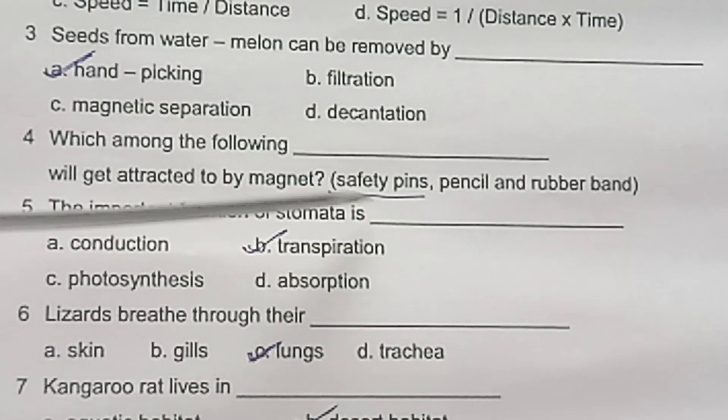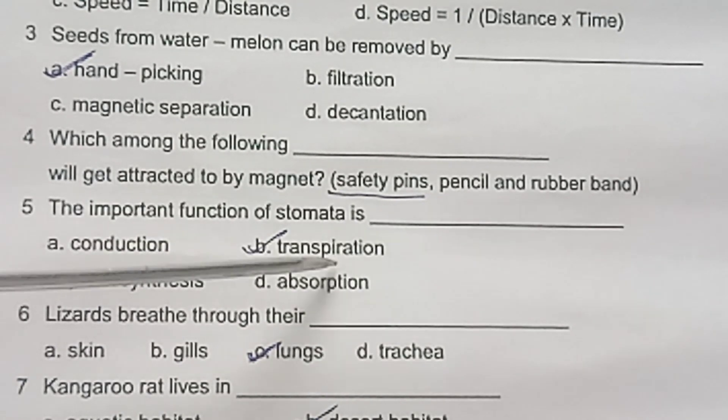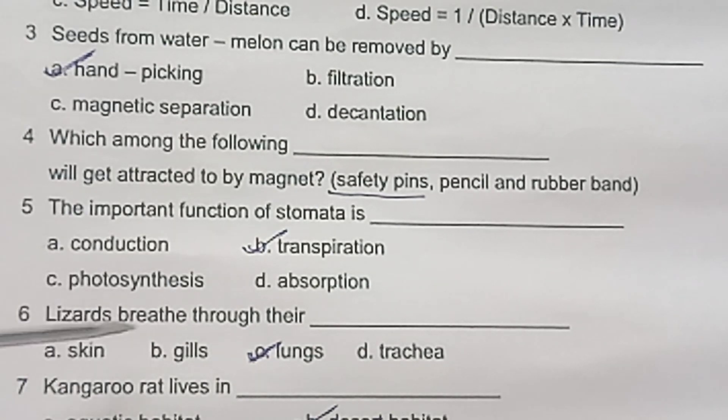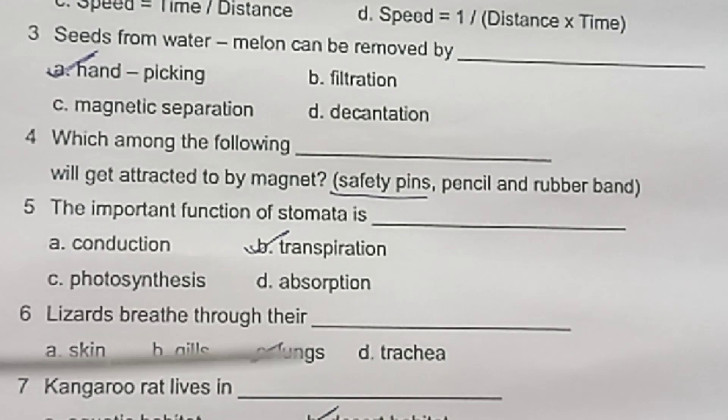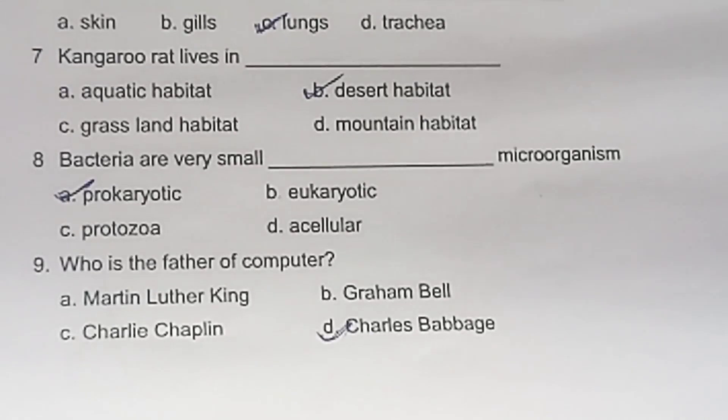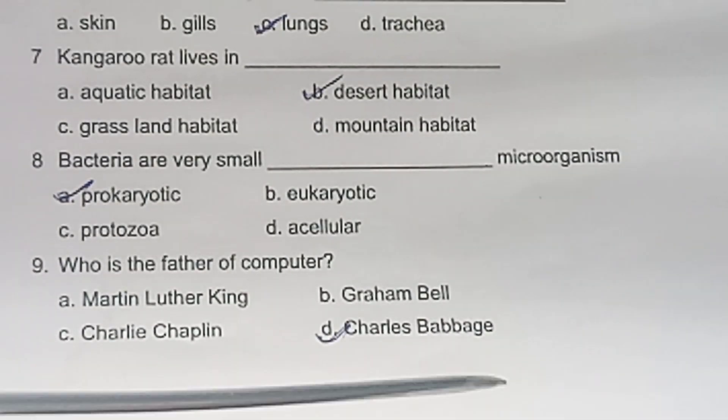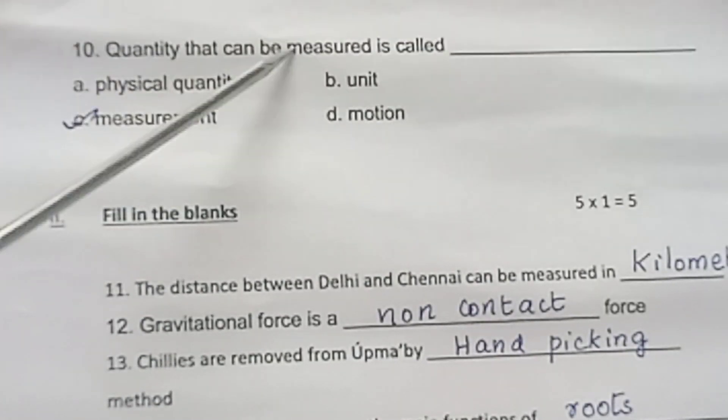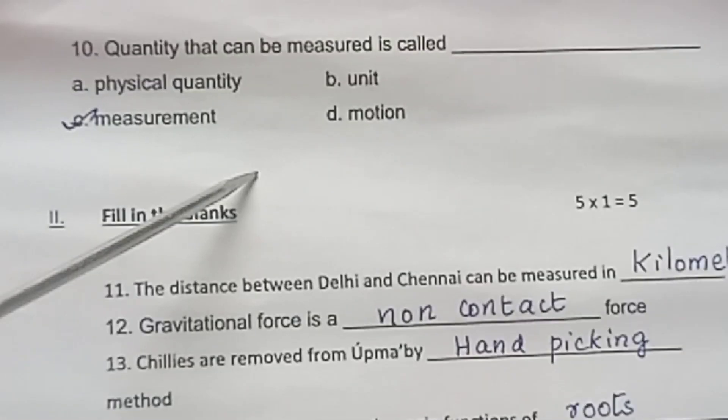The important function of stomata is transpiration. Lizards breathe through their lungs. Gangaru rat lives in desert habitat. Bacteria are very small prokaryotic microorganisms. Who is the father of computer? Charles Babbage. Quantity that can be measured is called measurement.